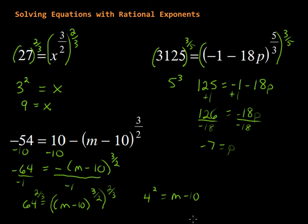And then, 4 squared is 16, equals m minus 10. And then, we add 10 on both sides, and that will give us m equals 26.